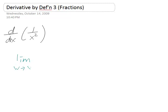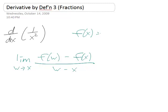I'm going to use the one with w approaching x of f of w minus f of x over w minus x. And here f of x is 1 over x squared.